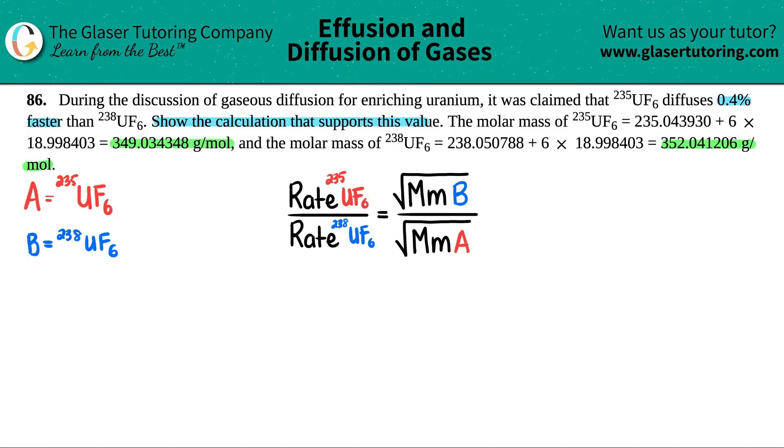So now, since I'm talking about A down below here, I have to put the information for the 235UF6 down below. MM just means molar mass. That's why they gave us those molar masses. So in essence, what we have to do is just square root the molar masses of 235UF6 and then 238UF6.